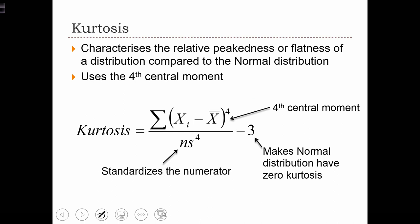Kurtosis is another descriptive statistic we can use to describe the peakness or flatness of a distribution, especially how it compares to the normal distribution.